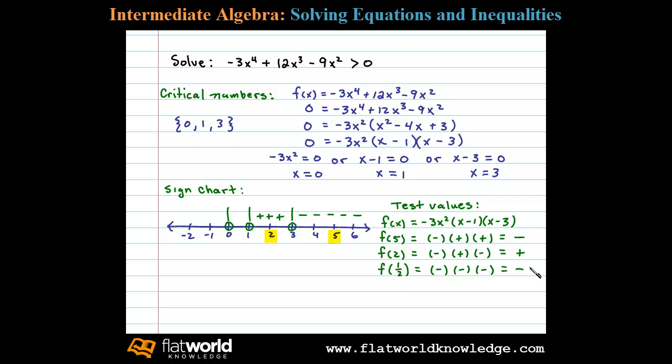Finally, choosing a number in this last region, say -1. Substituting in -1, we have -3 times (-1)² leaves us with a negative factor. -1 - 1 is negative, and -1 - 3 is negative. Again, multiplying 3 negative factors will result in a negative number.